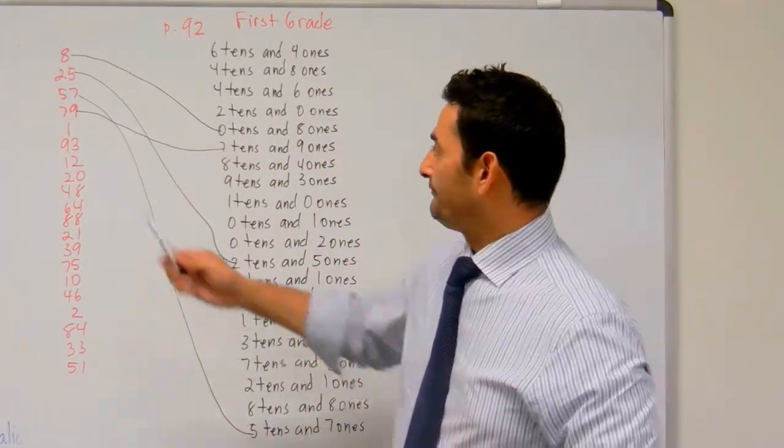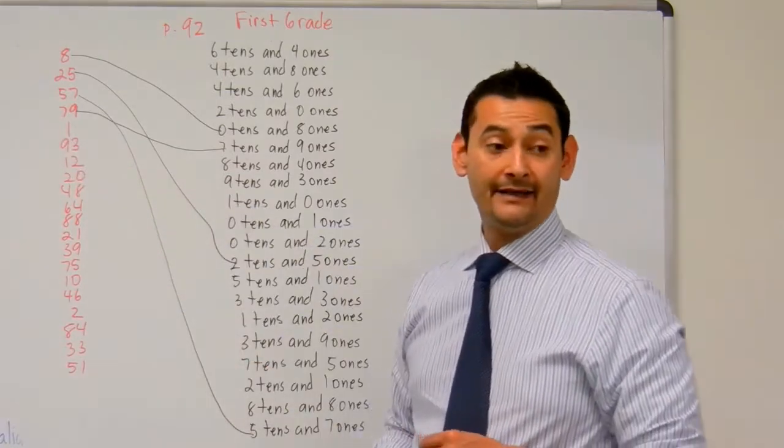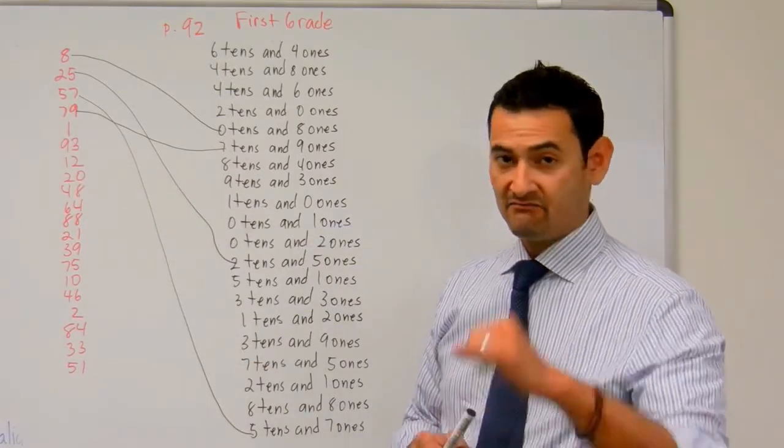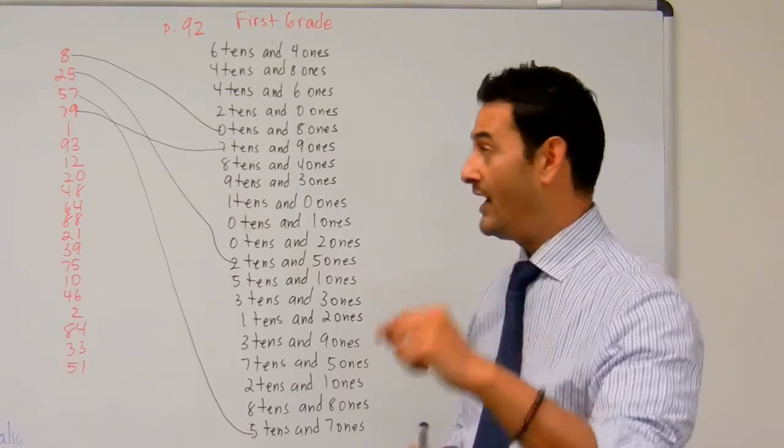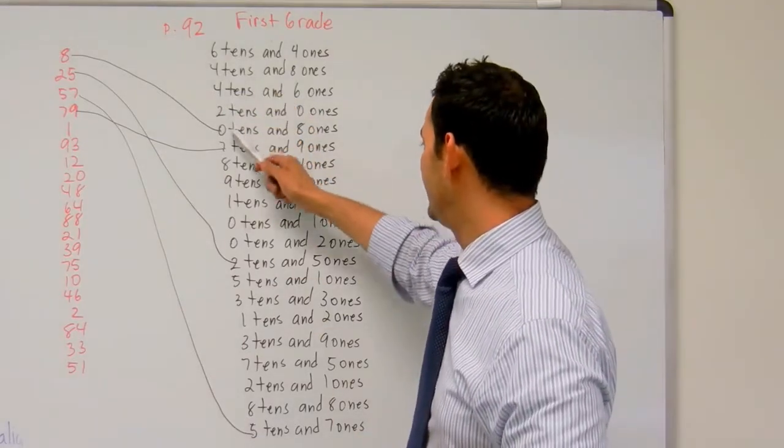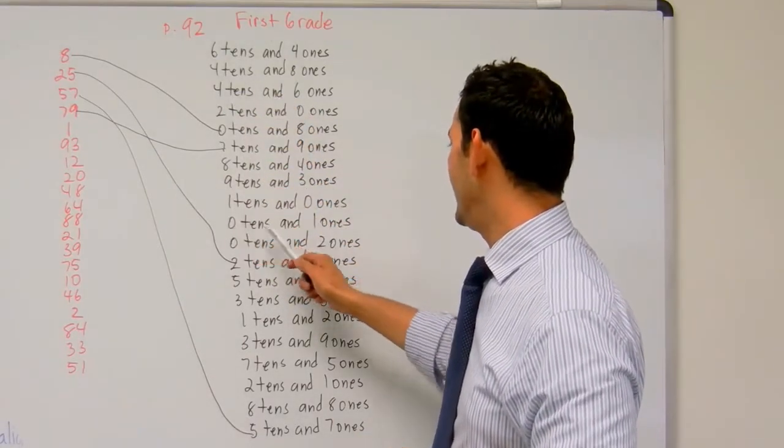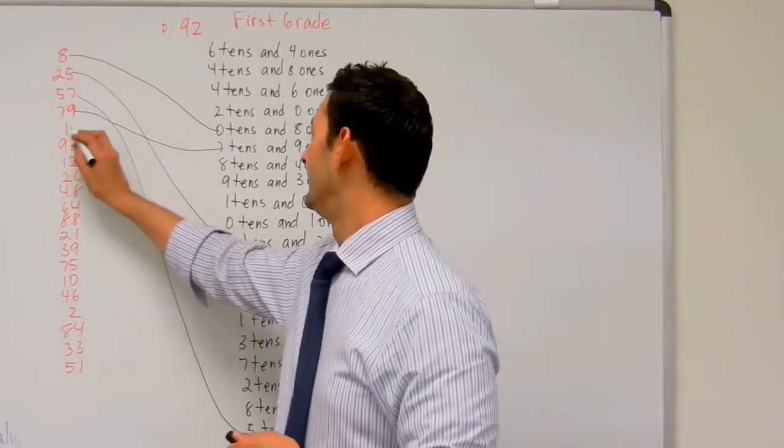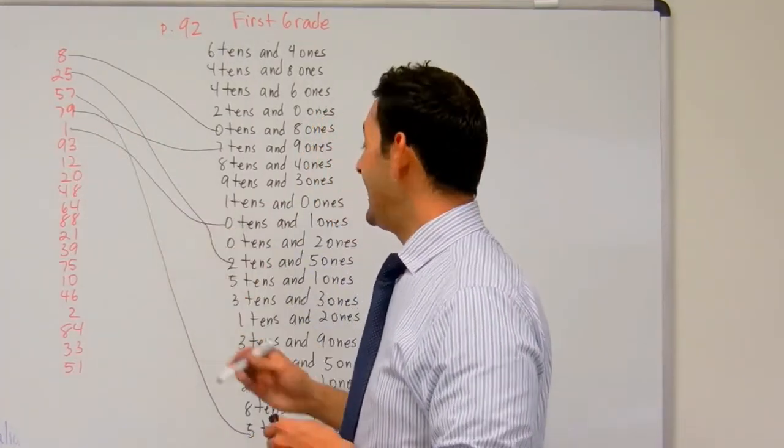And let's do a couple more. Here I've got the number one. How many bundles of ten do I have? Zero. How many ones do I have? One. So I'm looking for zero tens and one one. Zero tens and one one, there you go. I'm going to connect that there.